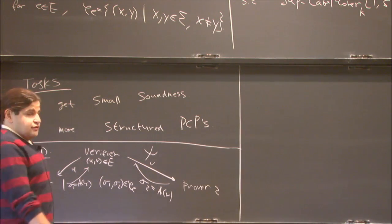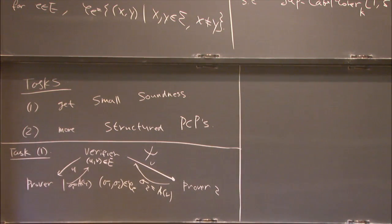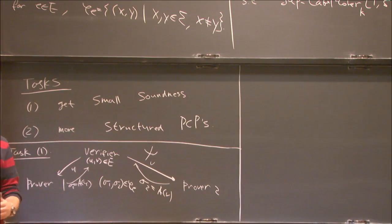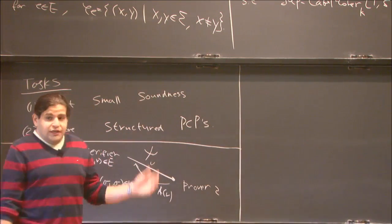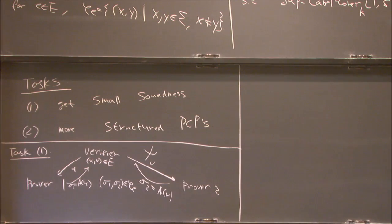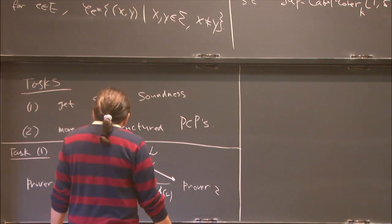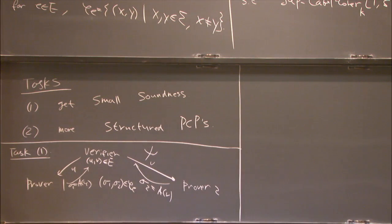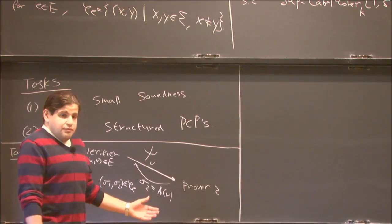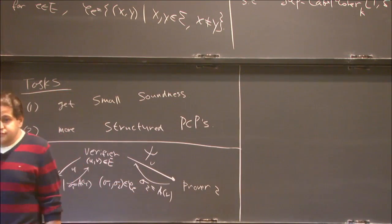If the instance is satisfiable, the provers can simply follow the assignment and always convince the verifier. Whereas if the instance is at most delta satisfiable, there is some chance depending on delta that they will fail. So we formulated label cover as a two-prover one-verifier game. How can the verifier gain more confidence about whether the instance is satisfiable?